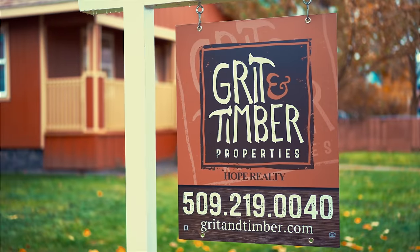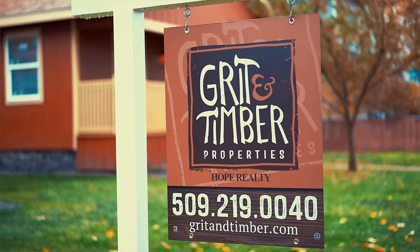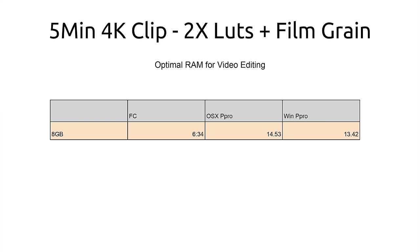The next test is a 5-minute 4K clip with 2 LUTs and film grain applied. At our baseline of 8 gigabytes, Final Cut gives us 6 minutes and 34 seconds to render and export. Running Premiere Pro on OSX we see 14 minutes and 53 seconds, and running Premiere Pro on Windows, 13 minutes and 42 seconds.